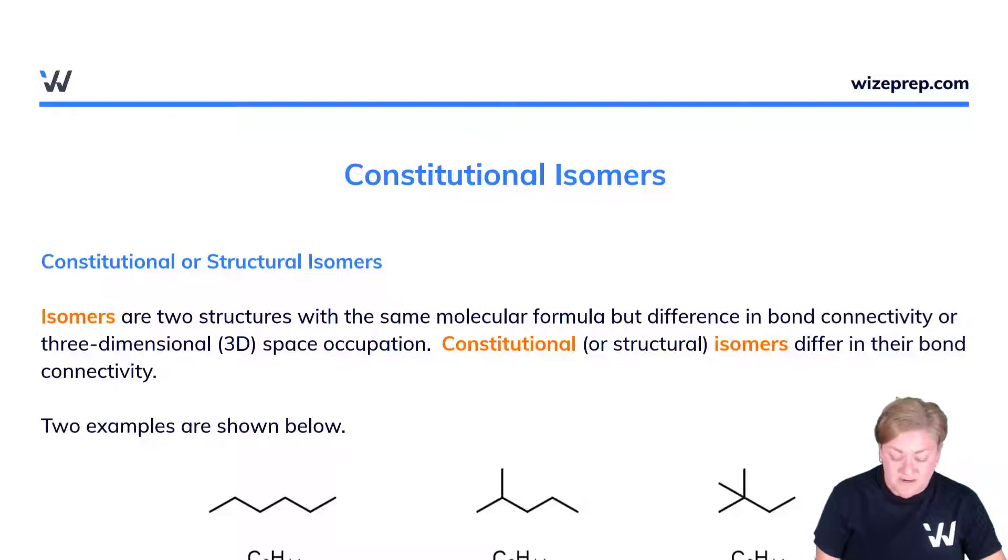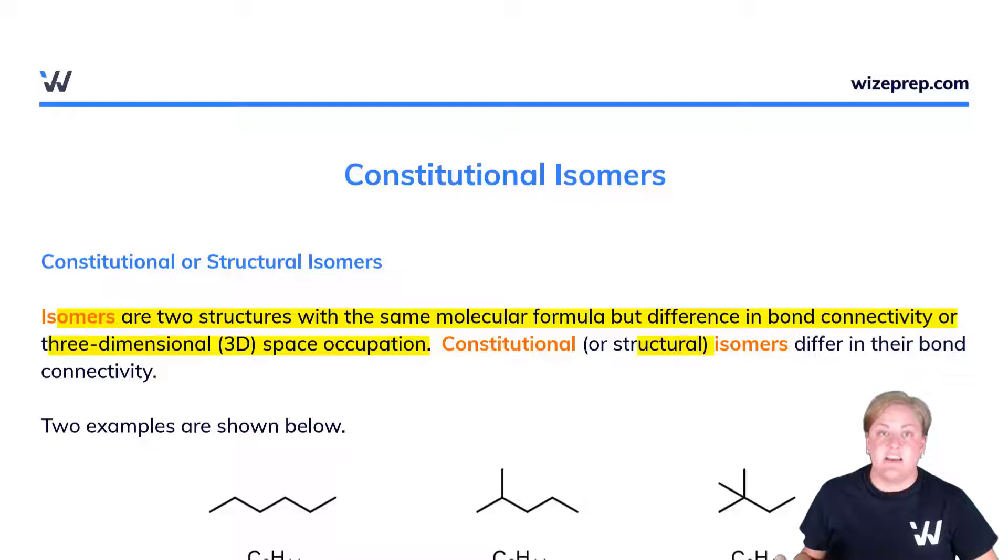Now isomers, by definition, are two structures with the same molecular formula but difference in bond connectivity or three-dimensional space occupation. We start with the constitutional, also known as structural isomer, as they differ in their bond connectivity.